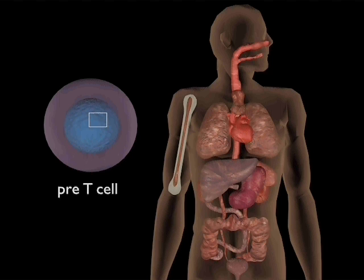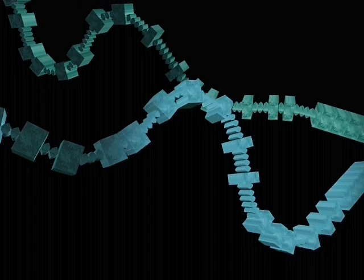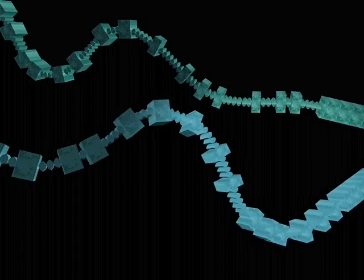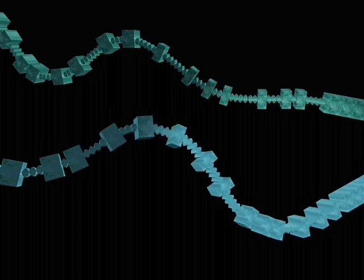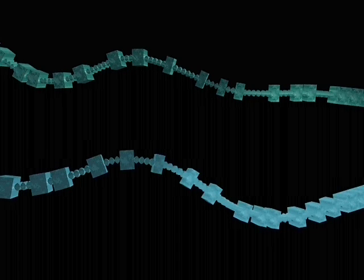Within the nuclei of all pre-T-cells are genes for T-cell receptor chains termed alpha, beta, gamma, and delta. Most T-cells use the alpha and beta genes, so the TCR is formed of an alpha chain and a beta chain.